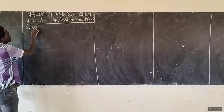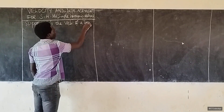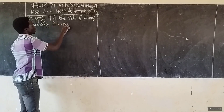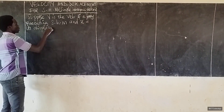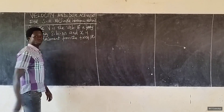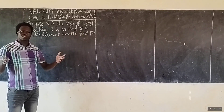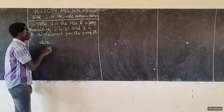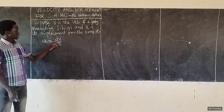Suppose V is the velocity of a body executing simple harmonic motion, and X is its displacement from the fixed point. Therefore, we will have that acceleration A is equal to dV/dT. It is true that acceleration is the rate of change of velocity.